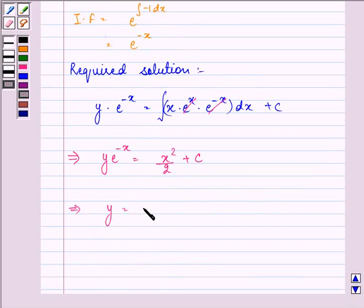which is y = (x^2/2)/(e^(-x)) + c/(e^(-x)), which can be written as y = (x^2*e^x)/2 + c*e^x.